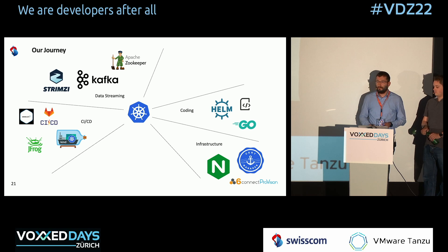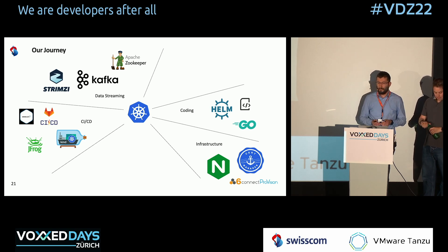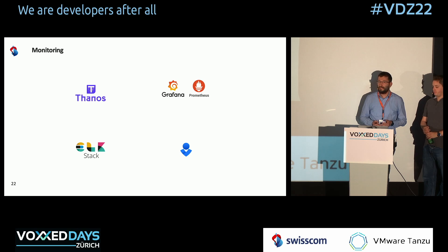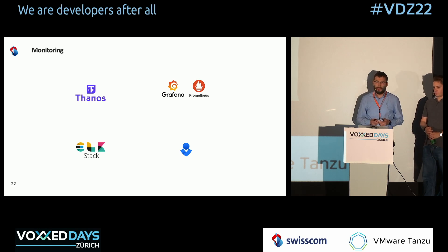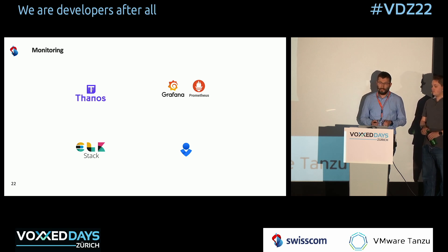Now we had all the components needed for the customer to access our service and consume logs. But from a service point of view, we were still not production ready — two more things were missing. One of them: monitoring. Our service has an SLA agreed with customers, so we deployed the Prometheus operator on all our Kubernetes clusters. Our engineers had access to metrics, dashboards, and alerts about the workload in the cluster, and they created SLIs and SLOs for the service.